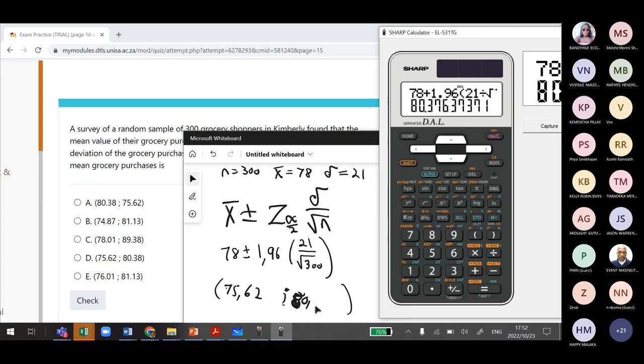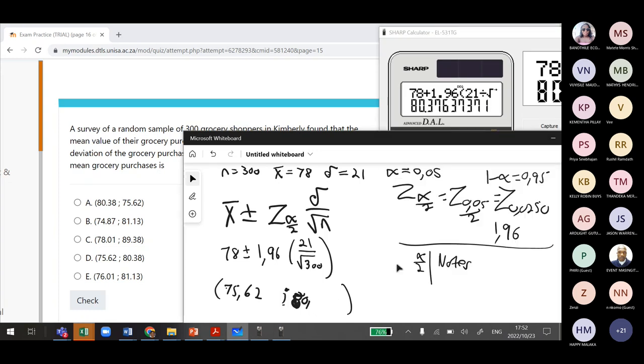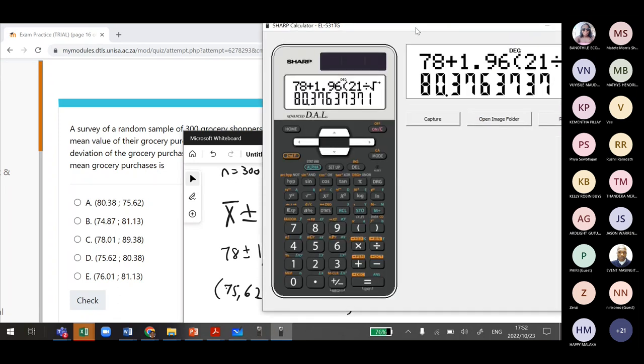75.38 to 80.38. So the answer is option D. Do you agree? Did you calculate it?